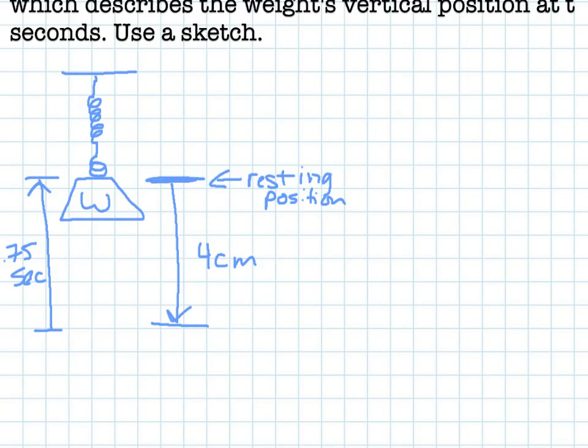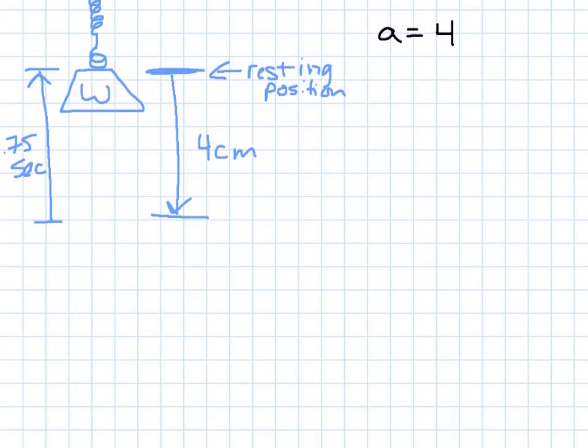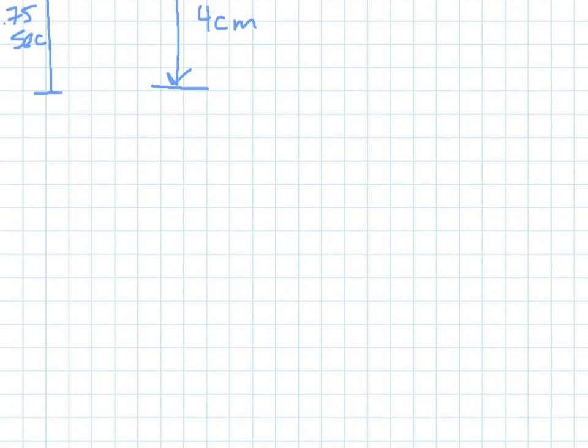So what that tells me is that my amplitude will be 4 because I'm going from the resting position to the minimum of 4 centimeters. Also, the 0.75 seconds tells me a bit about my period.